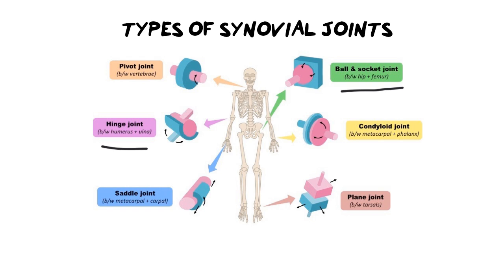The next kind of joint is a pivot joint, and it is most frequently seen in our vertebrae. The pivot allows you to rotate. We've learned earlier about the axis and the atlas bones in your vertebrae — it allows you to rotate your head left and right.